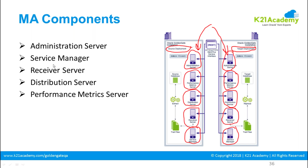In the service manager, you can see the report files and monitor lag. For administration, you configure services and provide services for the processes you have configured. Performance Metrics Server collects the performance of the processes. Previously we would run stats commands to see Golden Gate performance and transactions per second — all of this you can now see in the performance metrics server.